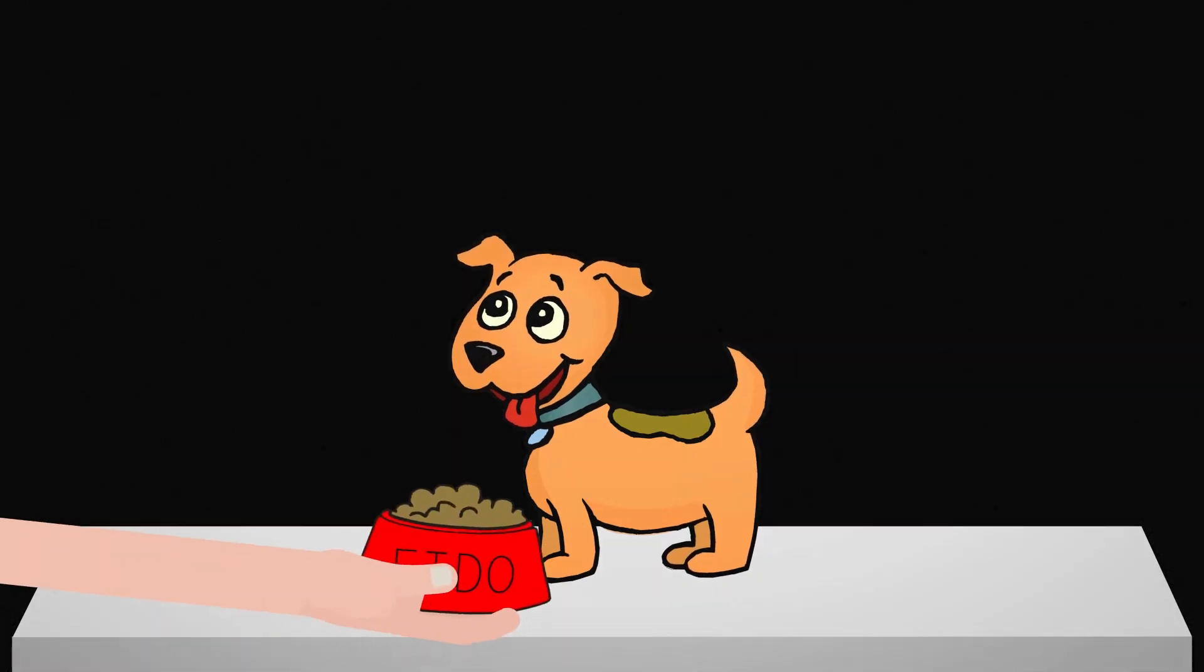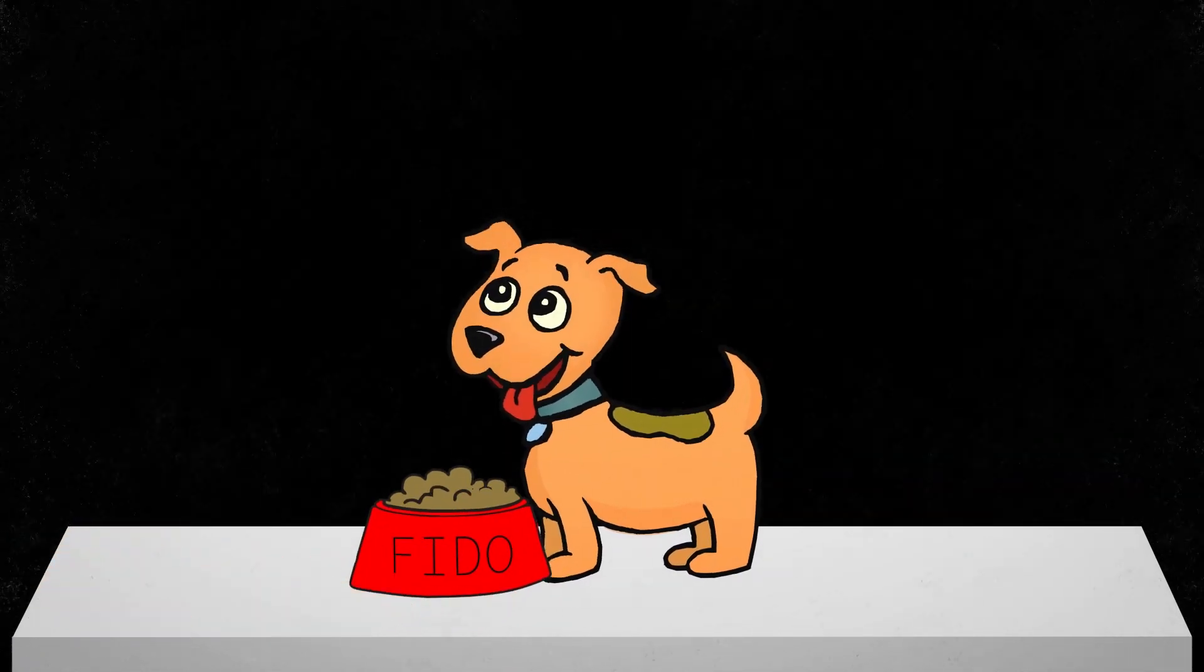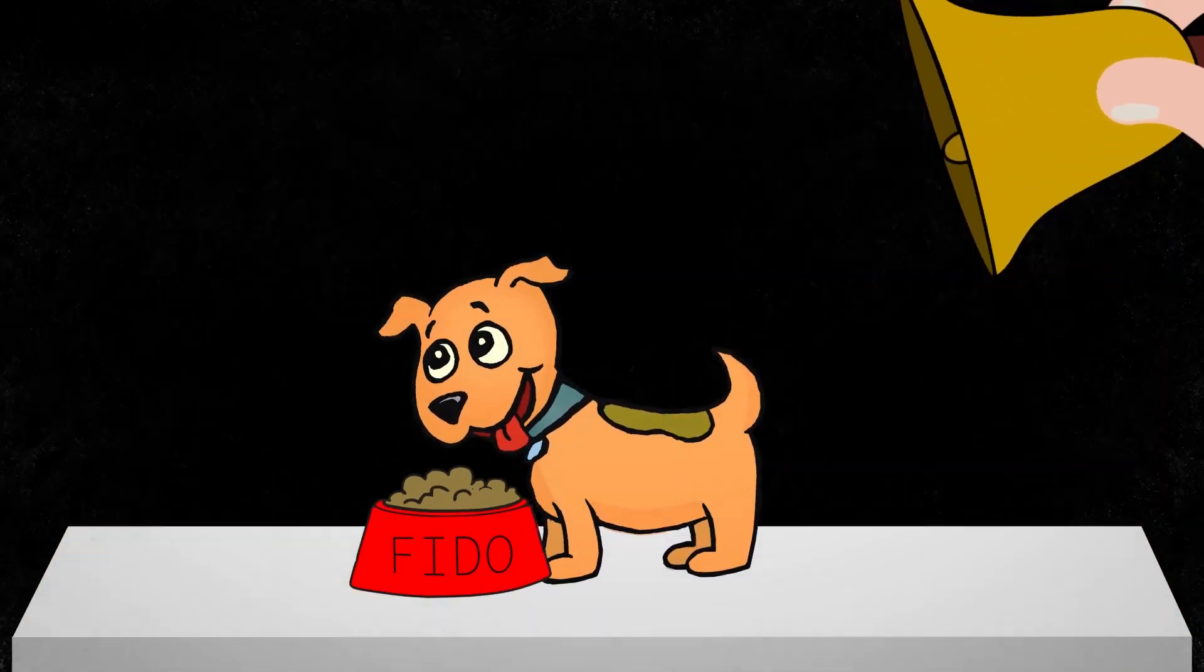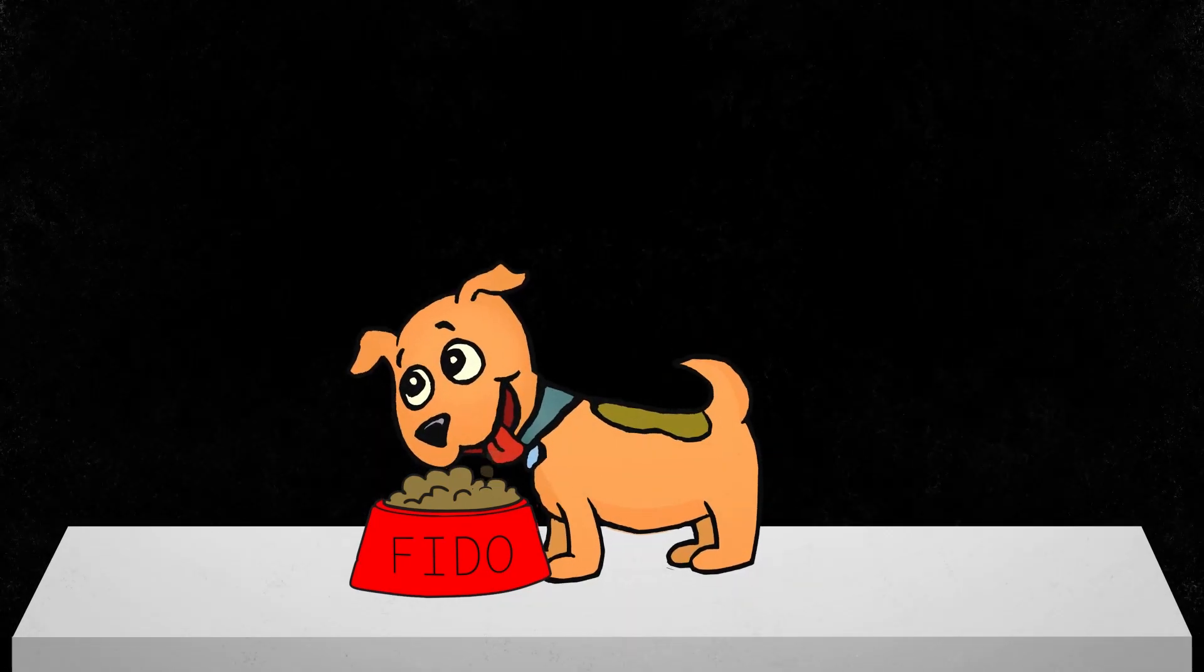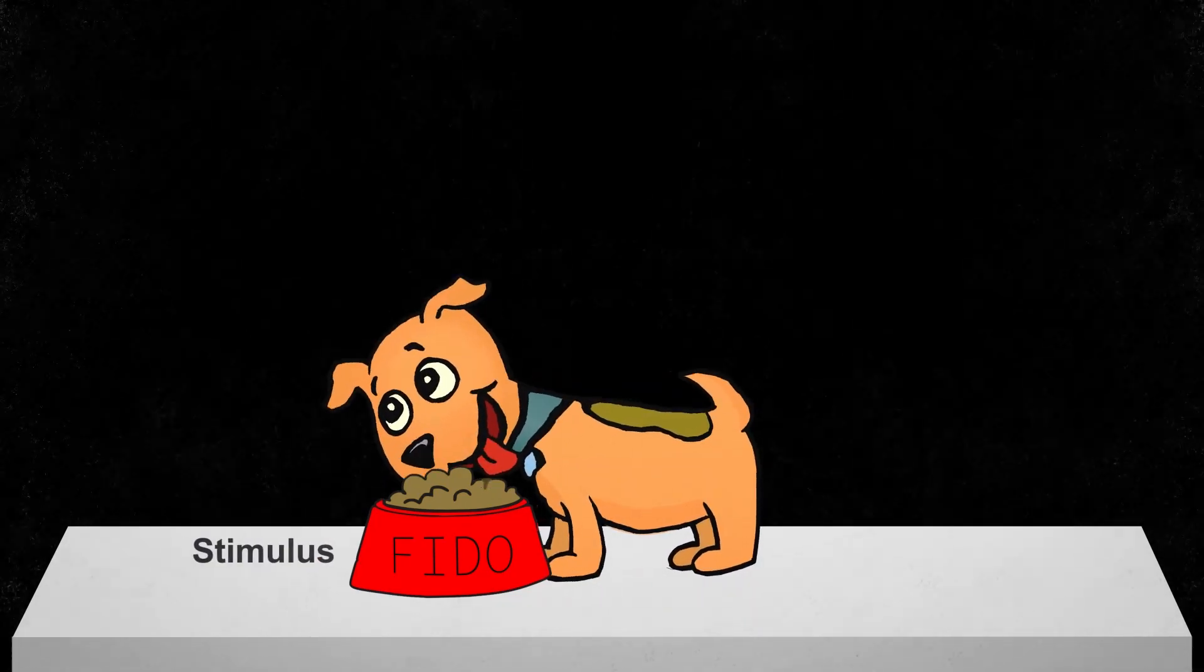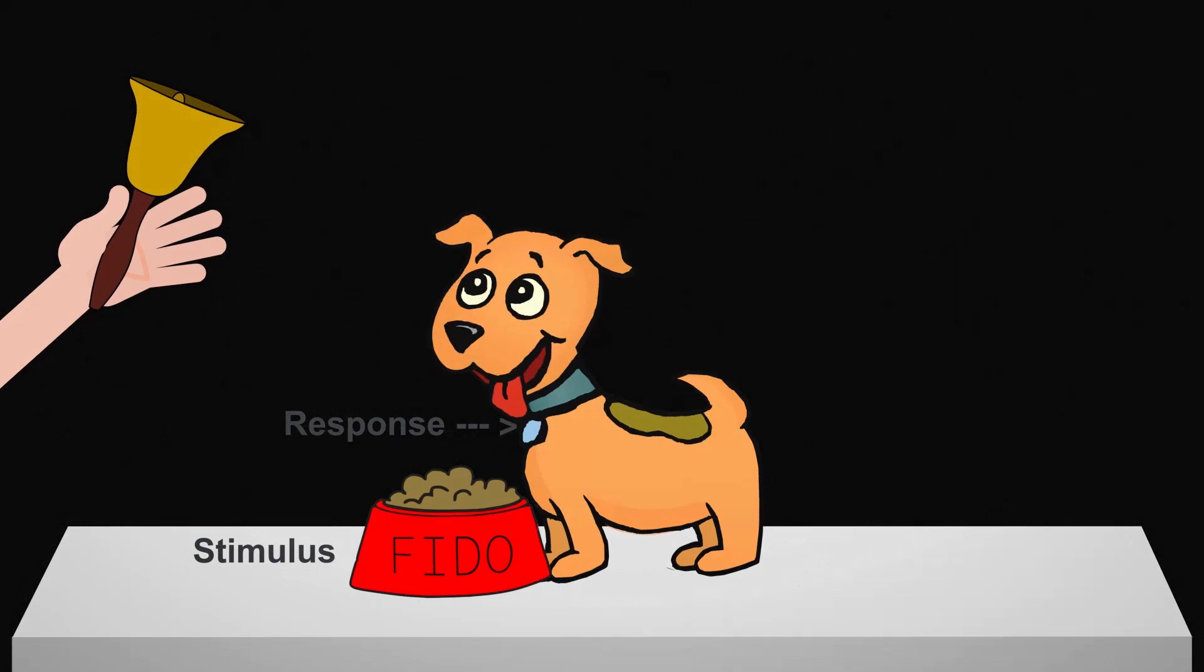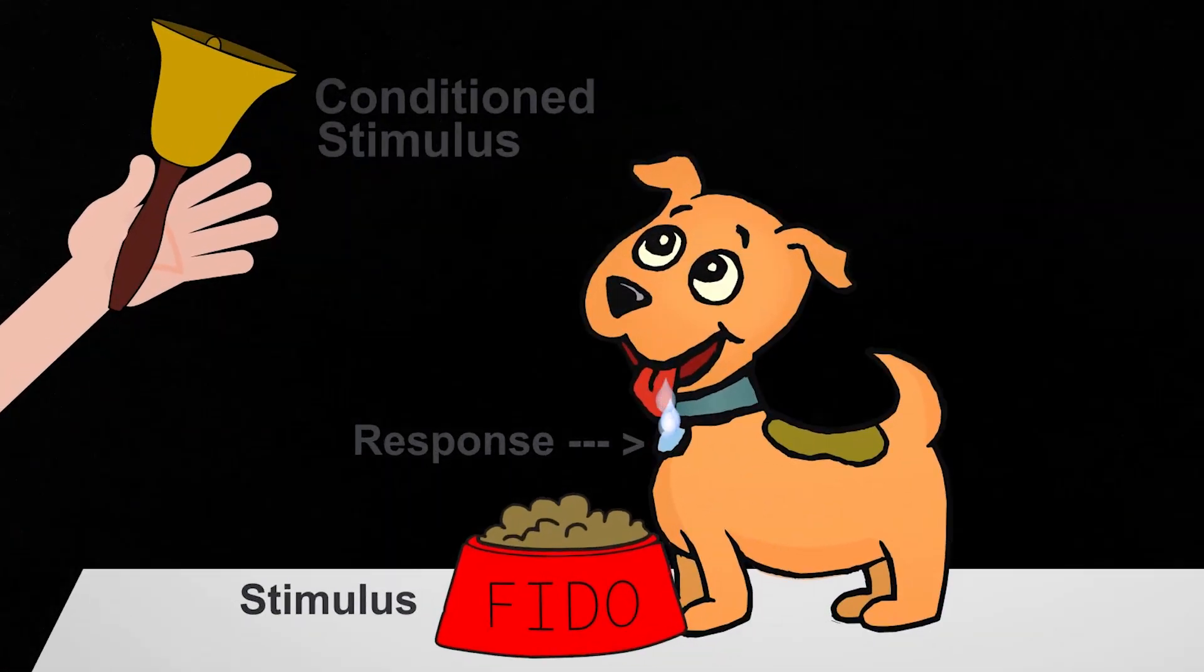But what he did was offer the dog a meal and then rang a bell. He had a stimulus and then produced a response. But along with feeding the dog a meal, he had a conditioned stimulus that went along with it - the ringing of a bell. So every time he fed the dog a meal, he rang a bell.